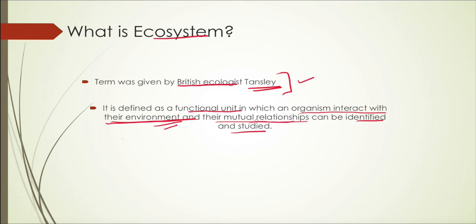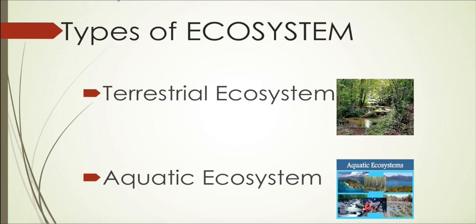The ecosystem also talks about relationships — what kind of relationships we share with our environment, whether we are protecting it or not. Environment encompasses the plants, the animals, anything and everything that comes under it.